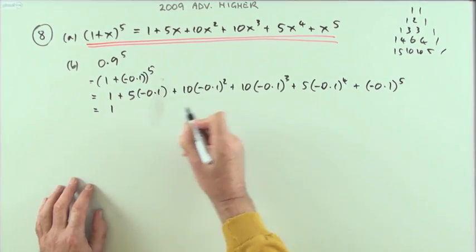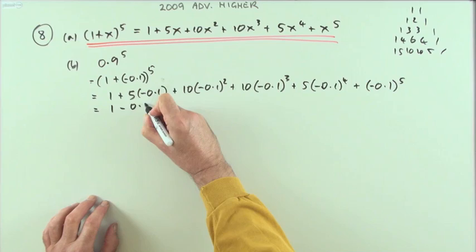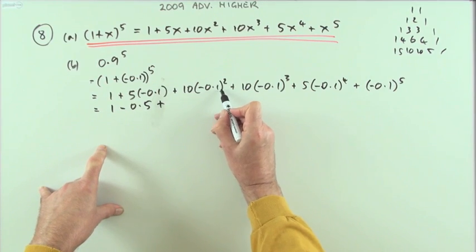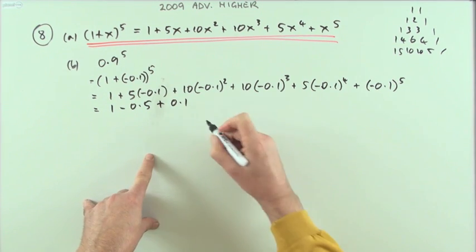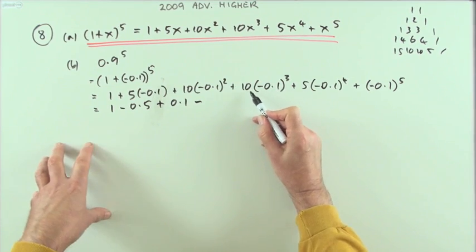And step further and just write out what each of these things are. So that's going to be minus - so I'll be minus 0.5. That part's going to be positive - that's 0.01, but times 10 makes it back to 0.1.